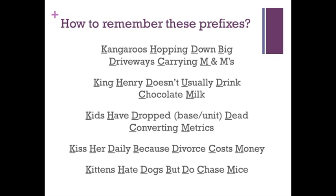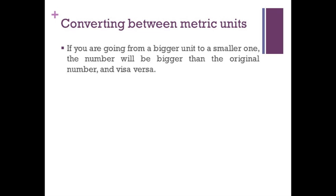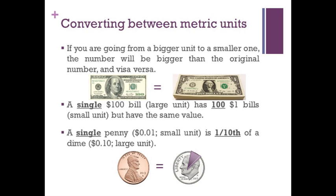Now that you have basic understanding of the prefixes and their relationship, let's go over how to convert across magnitude. Keep in mind, if you are going from a bigger unit to a smaller unit, the number will be bigger than the original number and vice versa. Small unit, big number. Big unit, small number. Think of this way, a single $100 bill is a large unit and has one hundred one dollar bills. Conversely, a single penny is only one tenth the value of a dime.